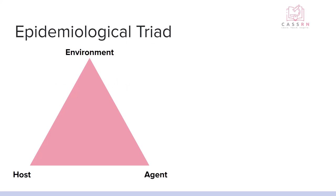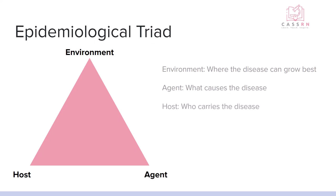The epidemiological triad describes three things affected by disease. First is the environment — where the disease can grow best. Second is the agent that causes the disease — the microorganism, which can be a bacteria, fungus, or virus. Third is the host — who can carry the disease. The host can be human or animal and doesn't always have to show symptoms; they can be a carrier and still pass the microorganism to another susceptible host. This is where the chain of infection also comes into play.